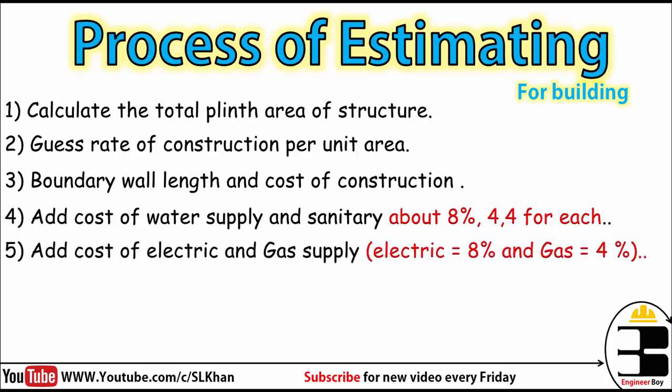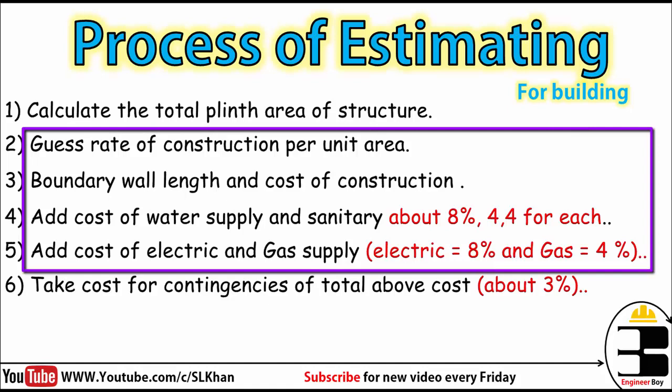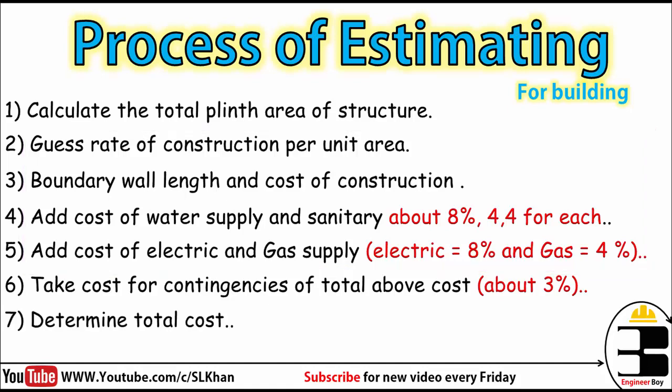Then we add the cost of electric and gas supply — 8% for electricity and 4% for gas. Then we add the cost of contingencies, which is about 3% of the total above cost. Finally, we determine the total cost by adding all these items together. These are the basic steps used to determine the rough cost estimate of a building based on the plinth area method.